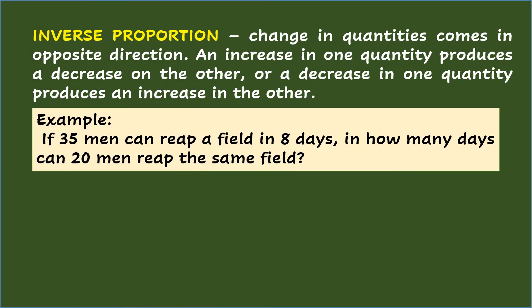A word problem involving inverse proportion happens when a change in quantities comes in opposite direction. An increase in one quantity produces a decrease on the other, or a decrease in one quantity produces an increase in the other. Example: if 35 men can rip a field in 8 days, in how many days can 20 men rip the same field? Take note: in inverse proportion, same items must go together in a ratio — so men is to men equals days is to days.